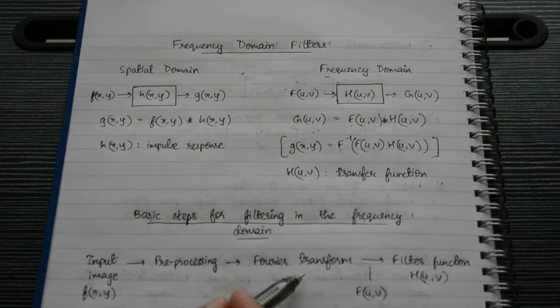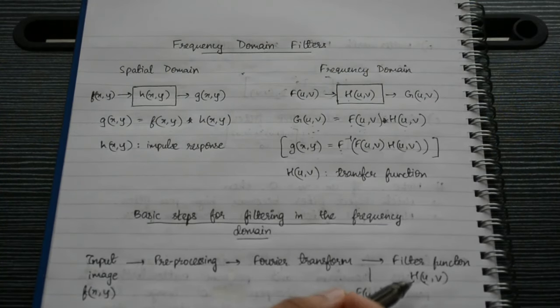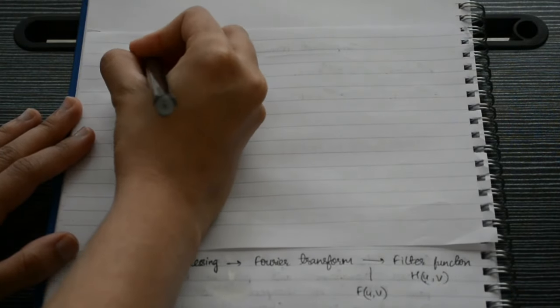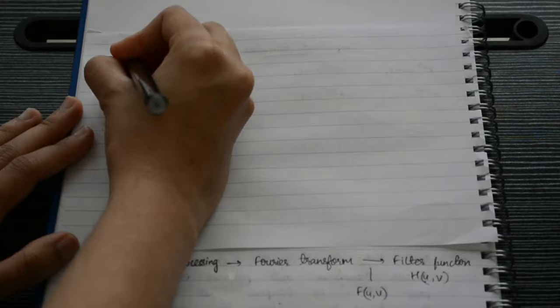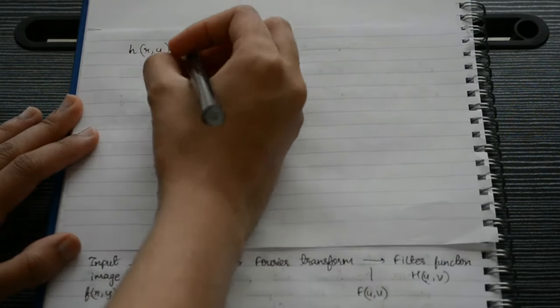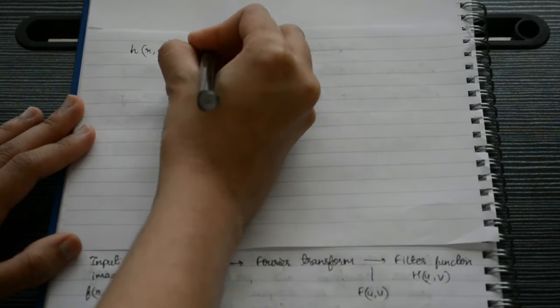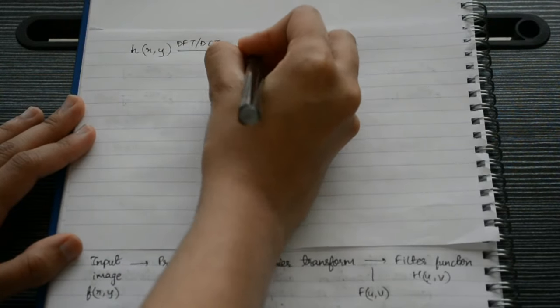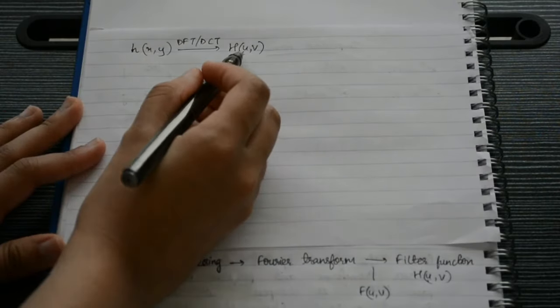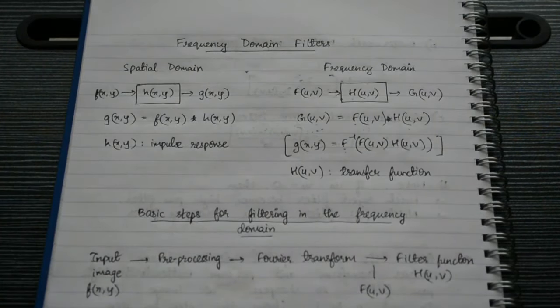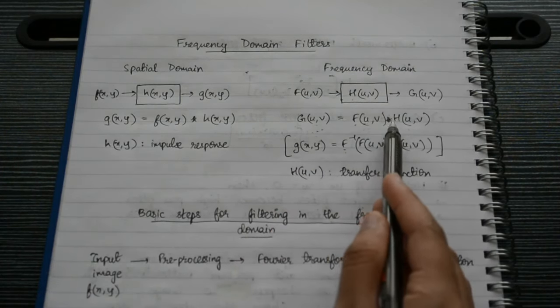In frequency domain, when we get our input image, we first need to pre-process it and then use Fourier transform, DCT, or some other transform to convert the image from spatial domain to frequency domain. Once converted, we use the filter function H(u, v). Initially, the filter function is H(x, y) in the spatial domain, so it also needs to be converted using DFT or DCT into the frequency domain.